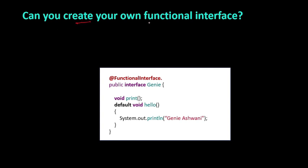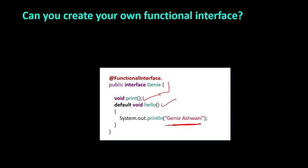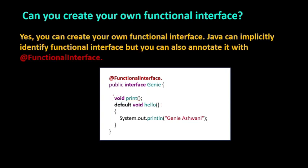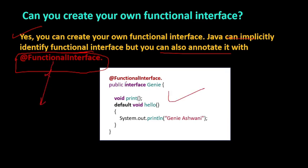Can you create your own functional interface? Yes — you annotate the interface with @FunctionalInterface and define only one abstract method, for example print(). You can also have default methods like a greeting method. Any number of default methods are allowed but only one abstract method. As a challenge: think about why we use the @FunctionalInterface annotation — what happens if you don't write it? Comment your answer below.